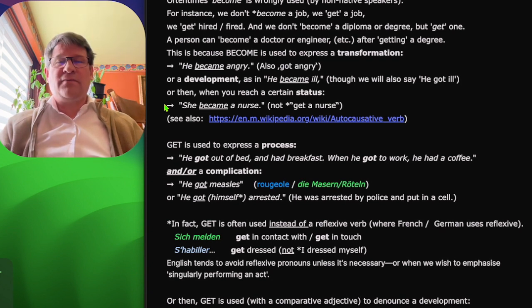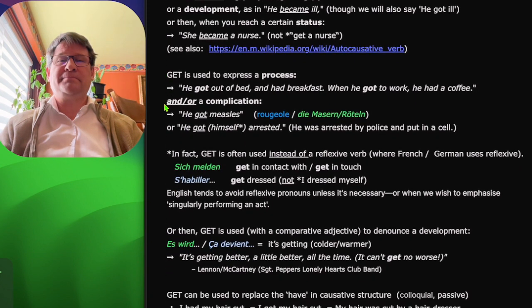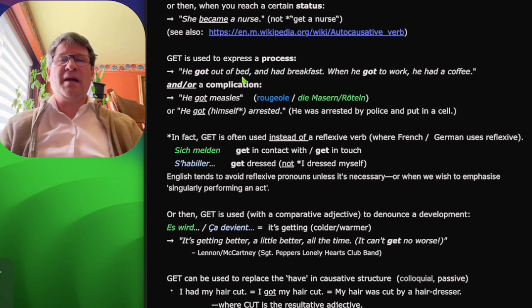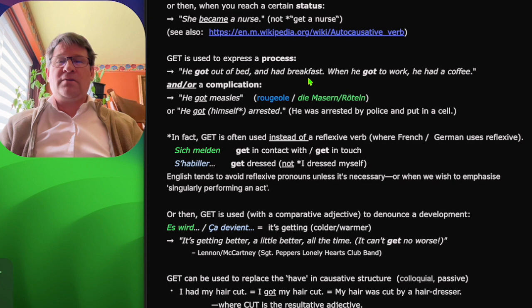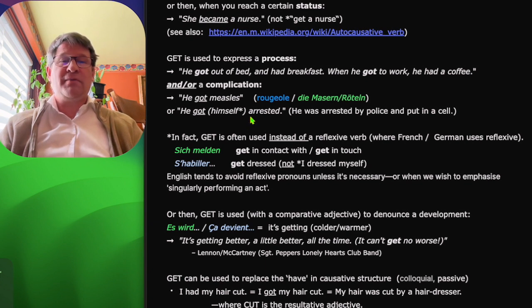So get involves a process. He got out of bed and had breakfast. When he got to work, he had a coffee. It can also be a complication involved. So he got measles. He got himself arrested. He was arrested by the police, put into a cell.